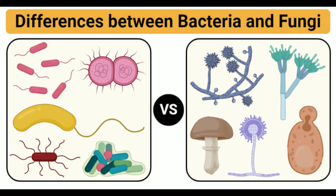Ribosomes: Bacteria, like all prokaryotes, contain 70S ribosomes. 70S ribosomes consist of 50S and 30S subunits. Fungi, like all eukaryotes, contain 80S ribosomes. The 80S ribosome is composed of two subunits: 60S and 40S. Reproduction: Bacteria reproduce by asexual methods like binary fission. Fungi reproduce through both asexual and sexual methods. Sexual reproduction takes place through fungal spores.